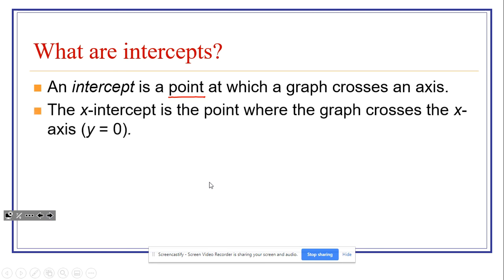The X-intercept is the point, any point, where a graph crosses the X-axis. In a function, sometimes, as we talked about in the last unit, there can be multiple X-intercepts. Anytime you have an X-intercept or where the graph crosses the X-axis, the Y value of that point is zero.